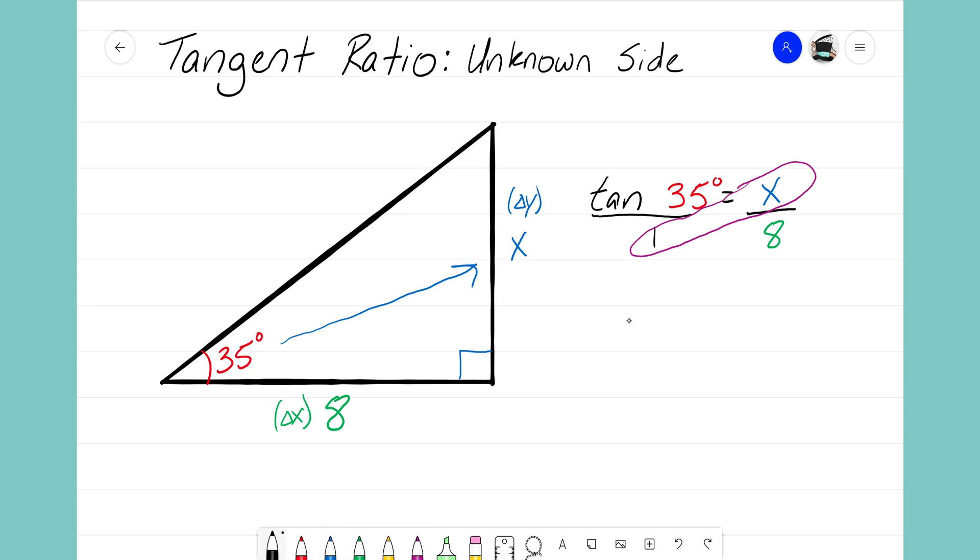So I'm going to cross multiply the bottom and the top here. 1 times x, that will create x, bring down the equal sign. I'm going to cross multiply the other piece here. 8 times tangent of 35 degrees. So I'll write 8 times tangent of 35 degrees.